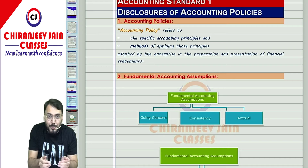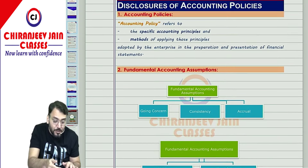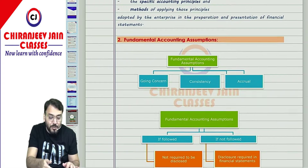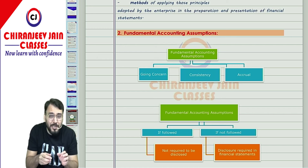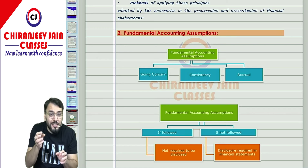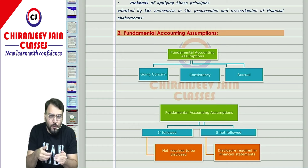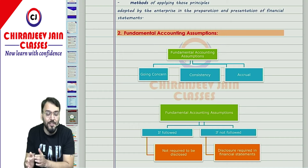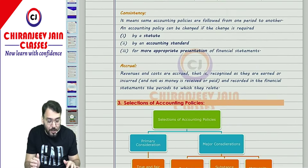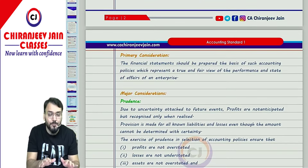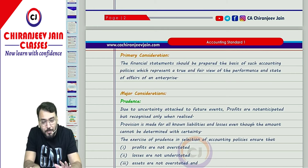If you come to the chapters — AS 1, AS 2 — you can see this is a multicolored book, which will help you stay interested in the accounting standards. Along with the content, flowcharts are also incorporated wherever required. The flowcharts make it easy to retain concepts for a longer period of time, so wherever required, flowcharts have been incorporated.